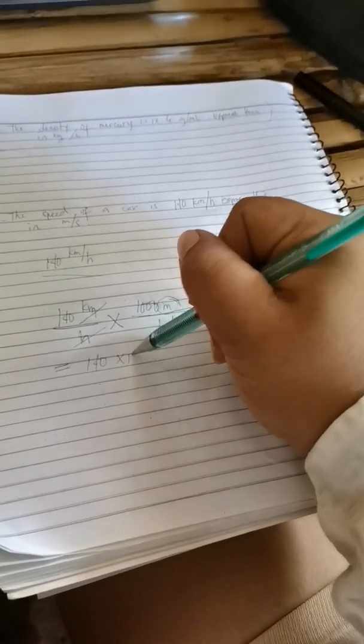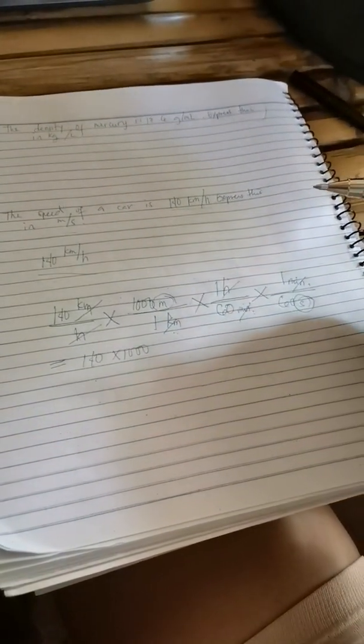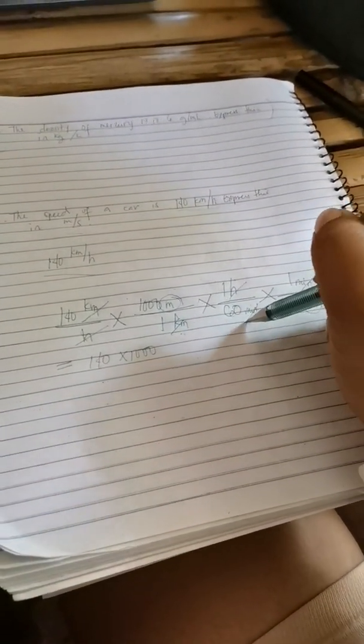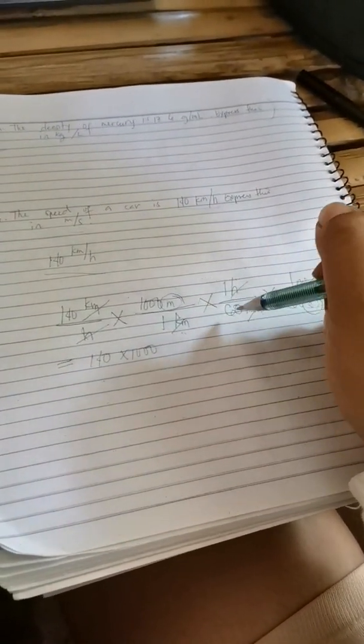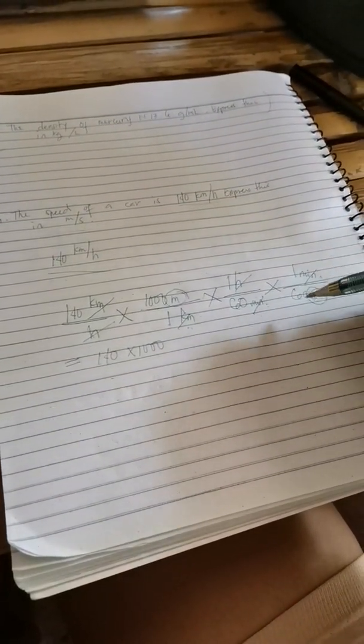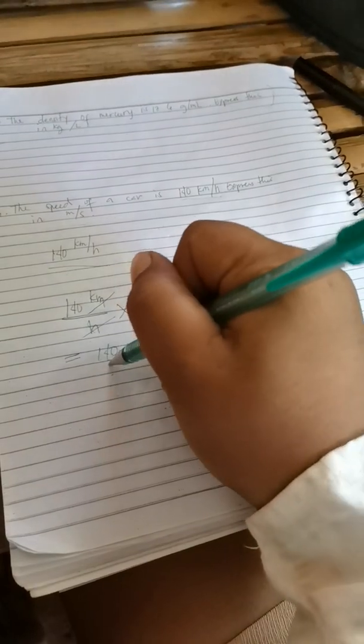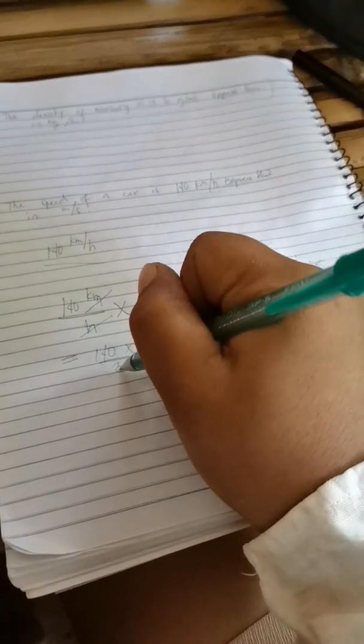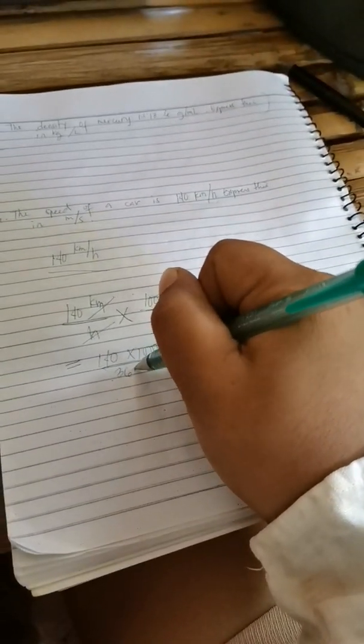That leaves meter in the numerator and second in the denominator. So to calculate this, the answer will be 140 times one thousand, divided by - times one, so as is - divided by 60 times 60, which is 3600.